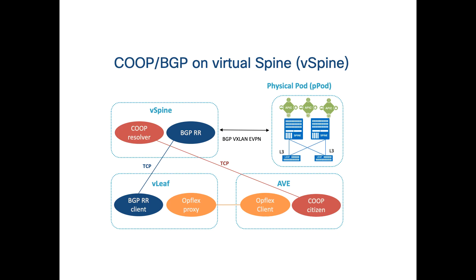A few more items before we jump on the lab: the V-spines and V-leaves are route reflectors. The V-spine is the route reflector server and the V-leaf is the route reflector client. There is BGP VxLAN EVPN from the V-spine to the physical spine. The V-spine also happens to be the COOP Oracle and the AVEs are the COOP citizens. The OpFlex protocol runs between the V-leaf and the AVE, and the AVE is the client for the OpFlex proxy which runs on the V-leaf.